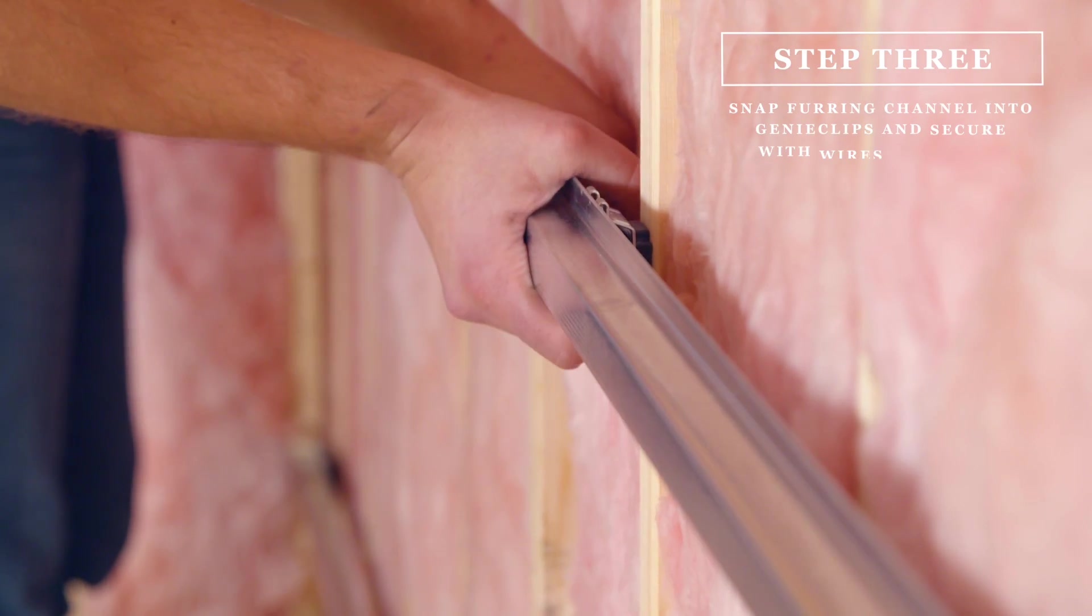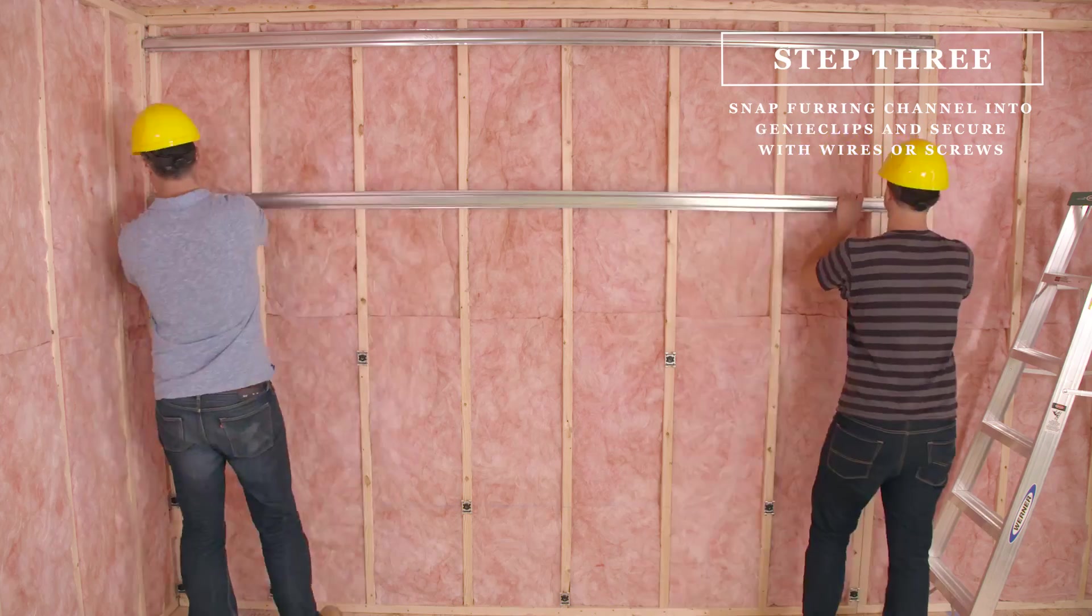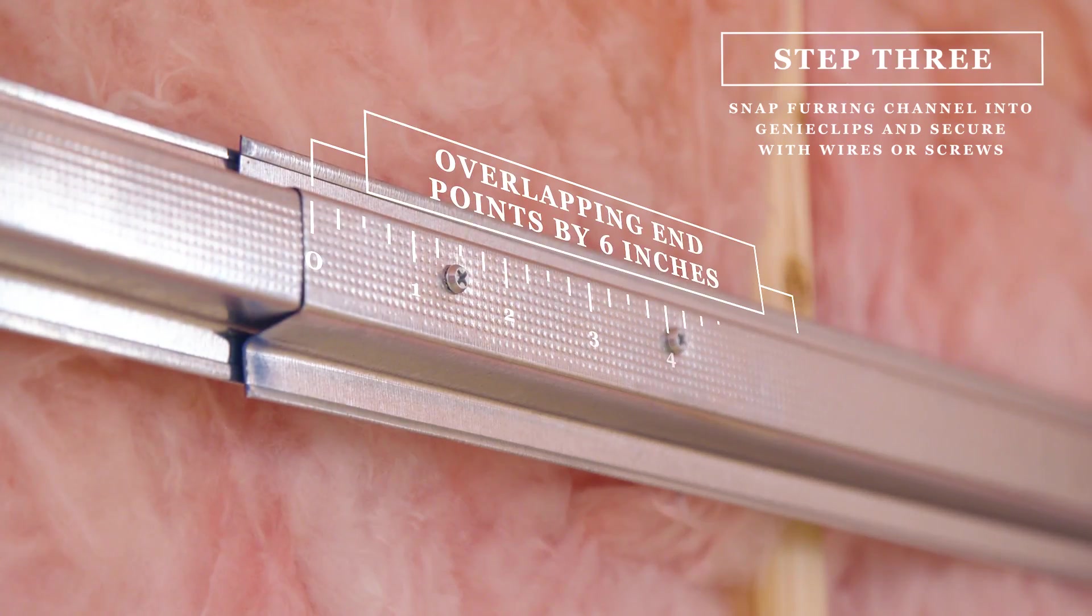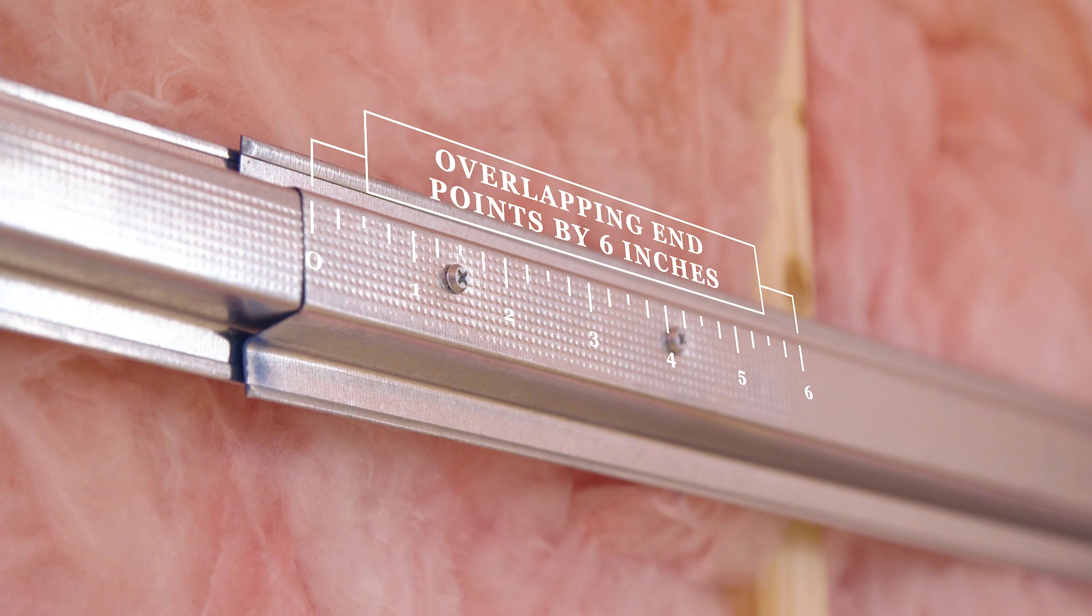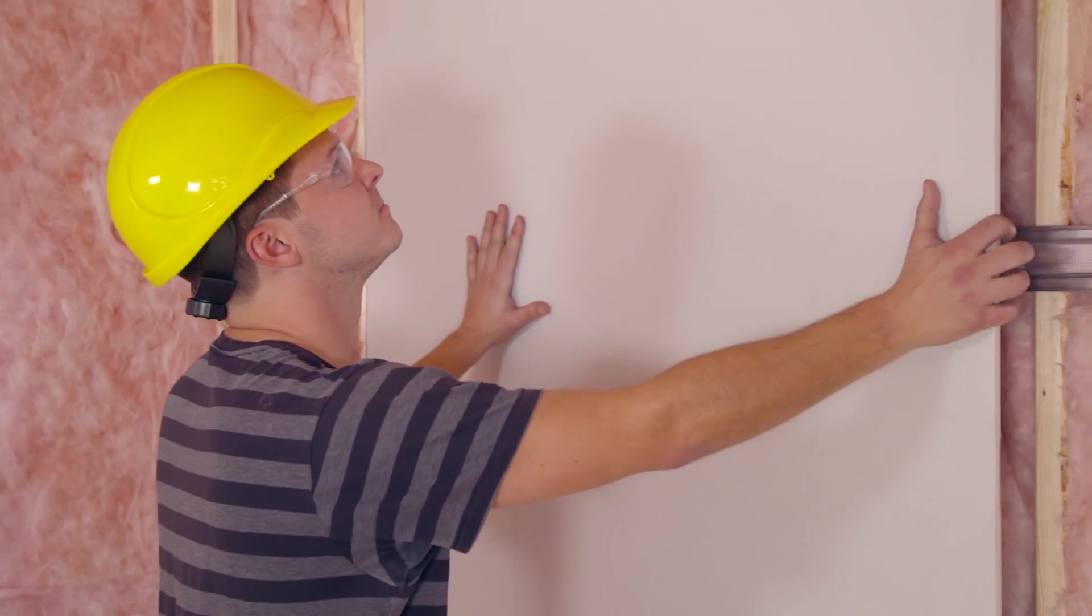Third, snap the furring channel into the Genie Clips and secure with wire or screws. Now, you're ready to hang gypsum board onto the furring channels.